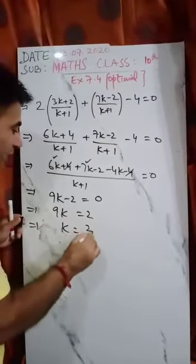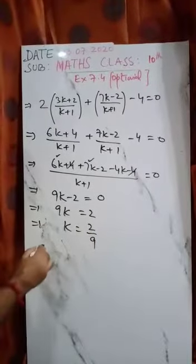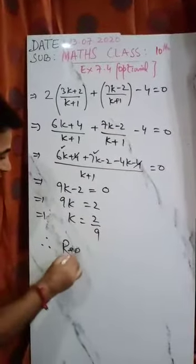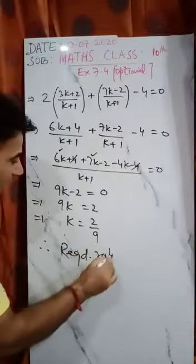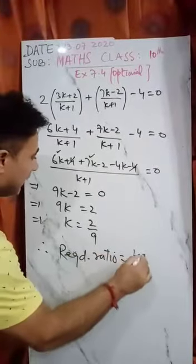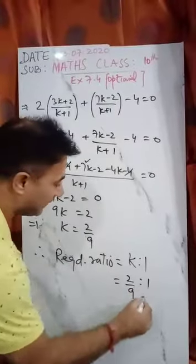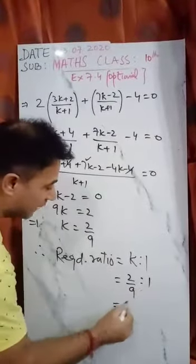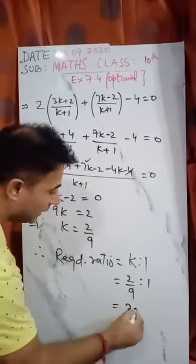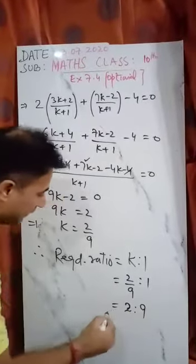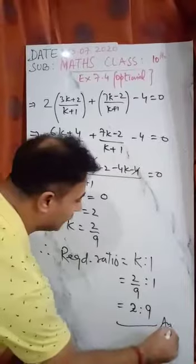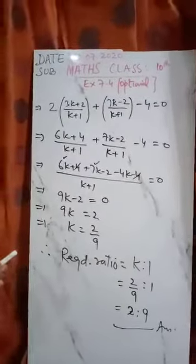Therefore, the required ratio - the ratio was k is to 1. So k value is 2/9. So 2/9 is to 1, which is 2 is to 9. So this is the required ratio, 2 is to 9.